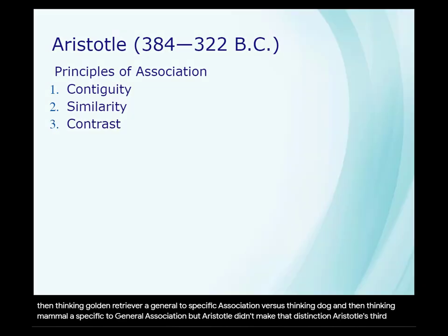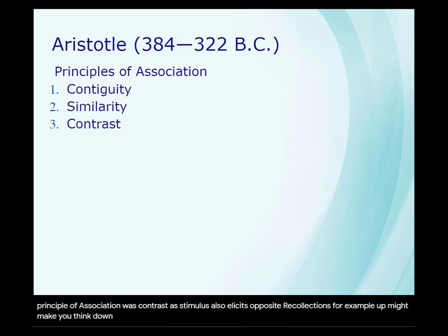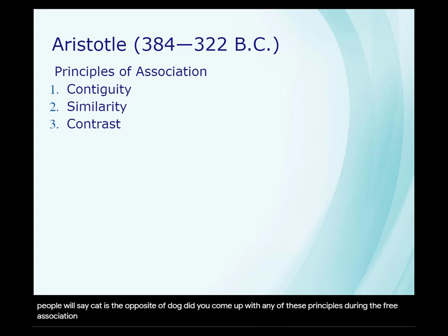Aristotle's third key principle of association was contrast: a stimulus also elicits opposite recollections. For example, 'up' might make you think 'down,' 'day' and 'night,' maybe 'boy' and 'girl.' To use the example we've been using, sometimes people will say 'cat' is the opposite of 'dog.' Did you come up with any of these principles during the free association exercise?